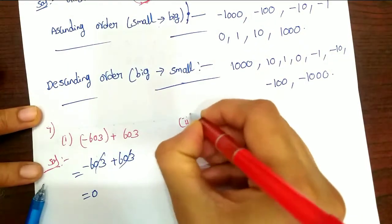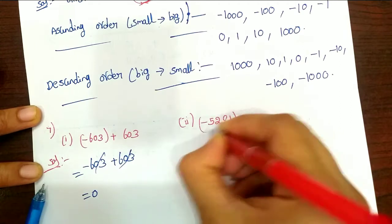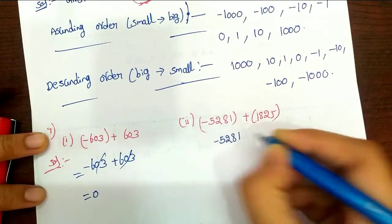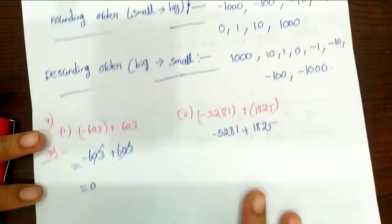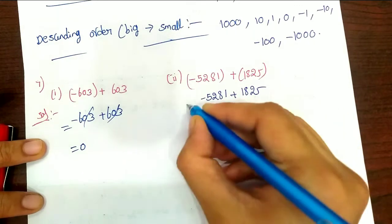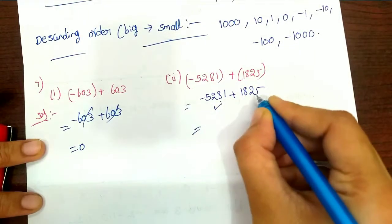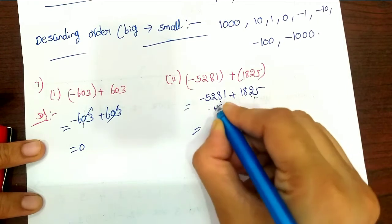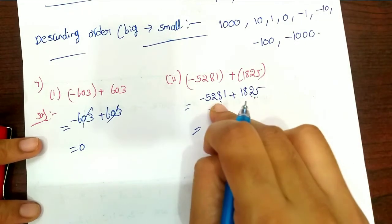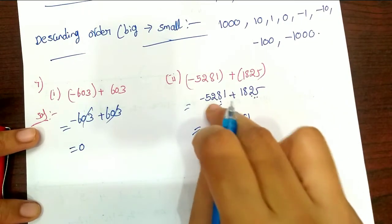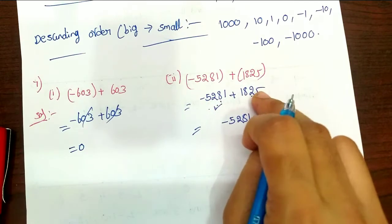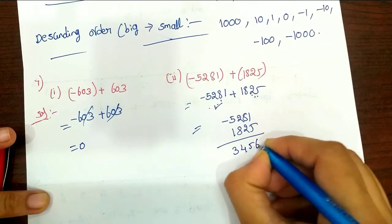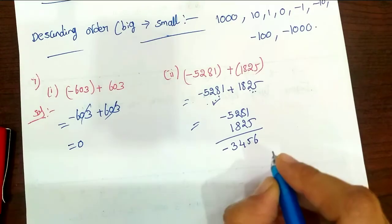Second one: minus 5281 plus 1825. So that is equal to minus 5281 plus 1825. Here, 5281 is the largest number and 1825 is the smallest. Since the largest number has a minus sign, the result is minus. We subtract: 5281 minus 1825 equals 3456. So the answer is minus 3456.